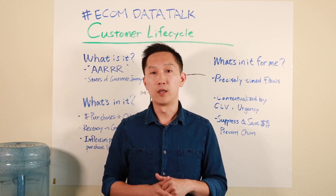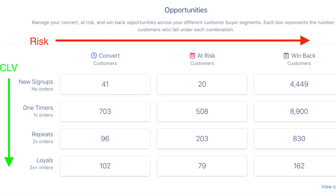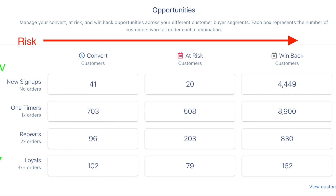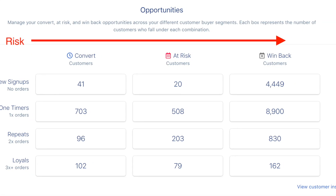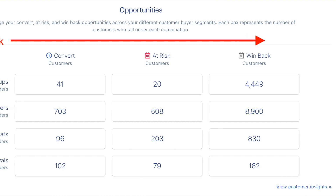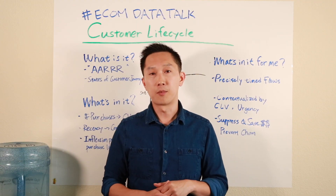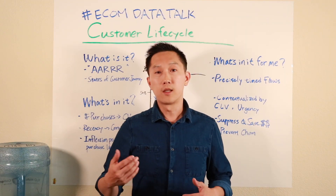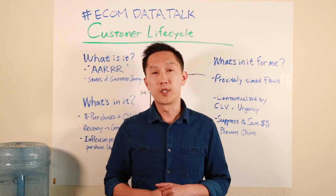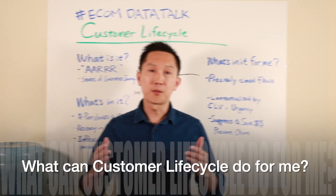And here's the opportunities grid again. We now see that customer value increases vertically down the funnel with more purchases, and conversion risk increases to the right, farther away from the last purchase. Next, let's look at a few example use cases of customer lifecycle and why you should care.